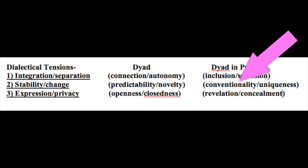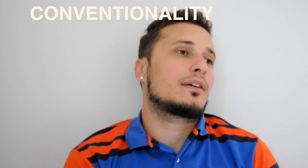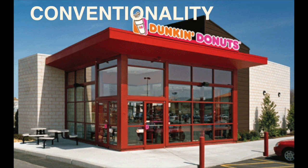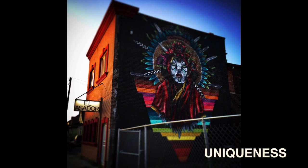When talking about stability and change in the public sphere — you two in public — we're talking about conventionality and uniqueness. A conventional place to eat would be somewhere like Applebee's, Burger King, or Dunkin' Donuts. Something unique would be going to a spot that has a door but no sign — a unique spot. So we have conventional versus unique in the public sphere. What separates this from the private tension is simply whether you're in public or not.